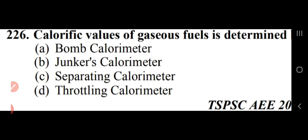Calorific value of gaseous fuel is determined by Junker calorimeter — option B. A bomb calorimeter is used to measure calorific value of solid and liquid fuels such as coal, gasoline, and kerosene.